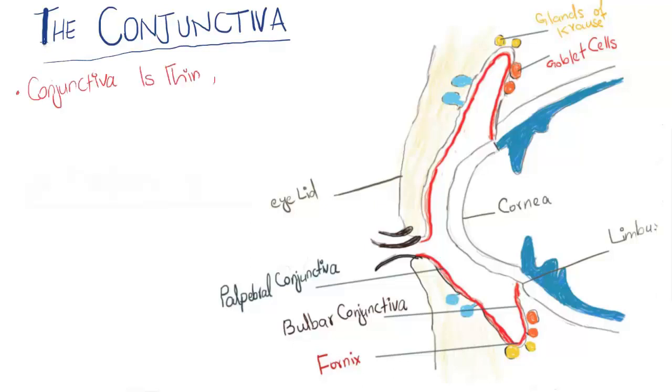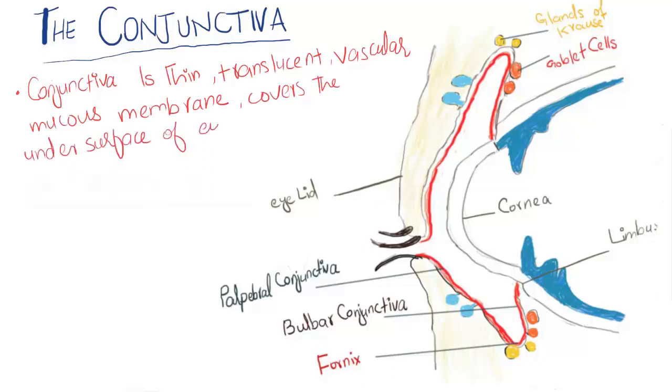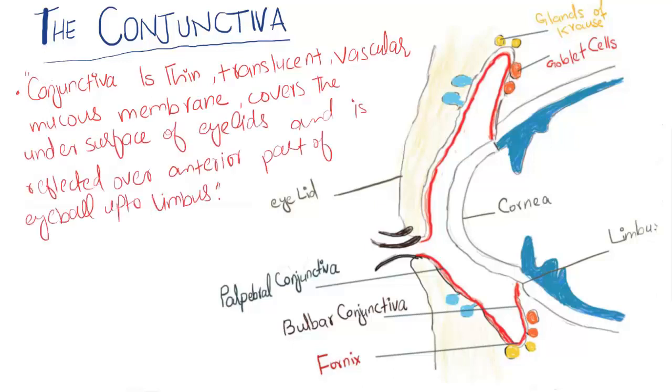The conjunctiva is a thin, translucent, vascular mucous membrane which covers the under surface of the eyelids and is reflected over the anterior part of the eyeball up to the limbus.